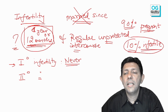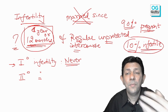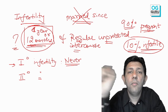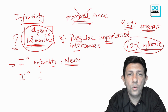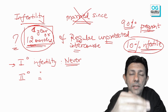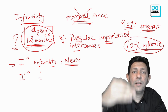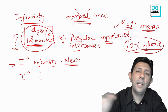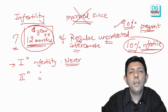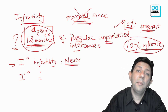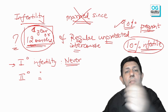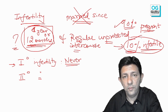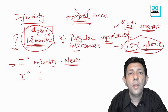These numbers — 90 percent and 10 percent — are important MCQ material. The question may be asked as: 'By the end of one year of regular unprotected intercourse, how many couples will be pregnant?' — answer 90 percent. Or: 'By the end of one year of regular unprotected intercourse, how many couples will remain infertile?' — answer 10 percent.